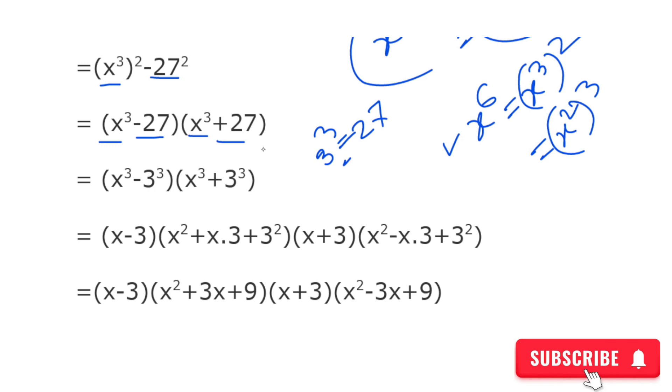Using a³-b³ and a³+b³ formulas: For x³-3³, we get (x-3)(x²+3x+9). For x³+3³, we get (x+3)(x²-3x+9).